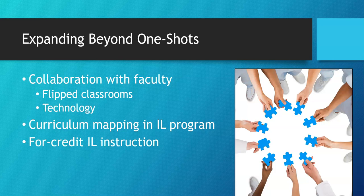Another option for expanding beyond one-shots is curriculum mapping. Librarians can work with a department to place different information literacy skills at different levels of a curriculum, or the library can spread information literacy skills across students' academic careers: introductory skills in first-year classes, different skills for sophomores and juniors, and higher-order skills for seniors or capstone classes. I've seen this done effectively with the standards at Gettysburg, and they have an impressive program entirely in the control of librarians.